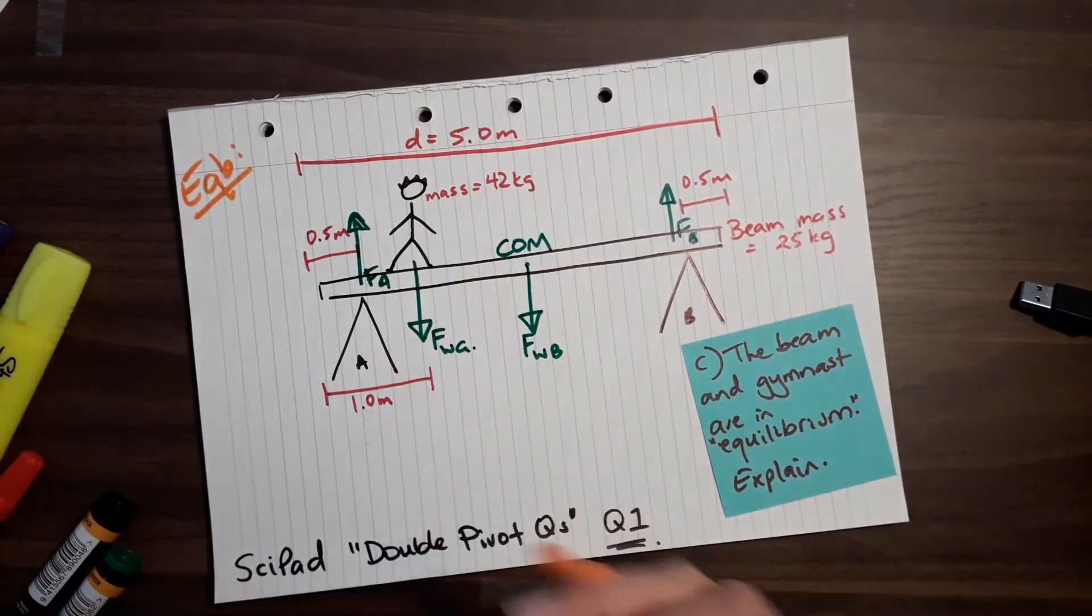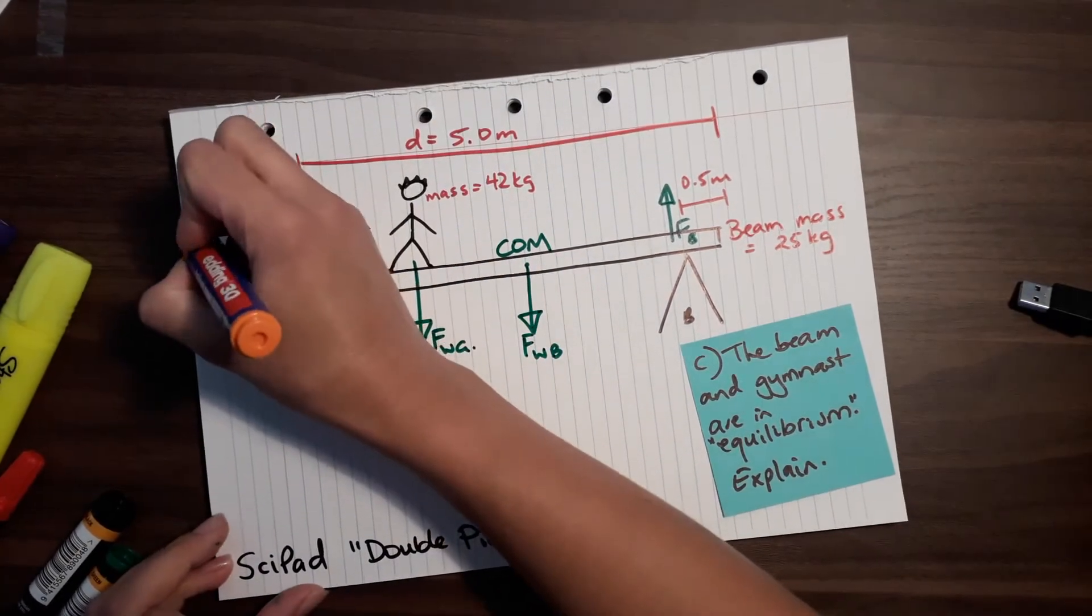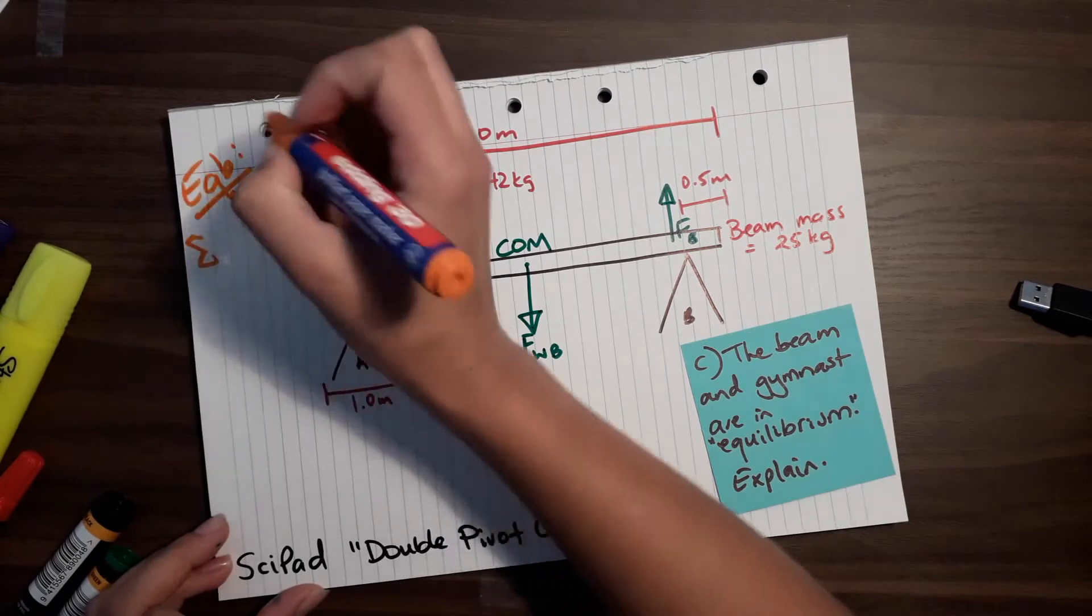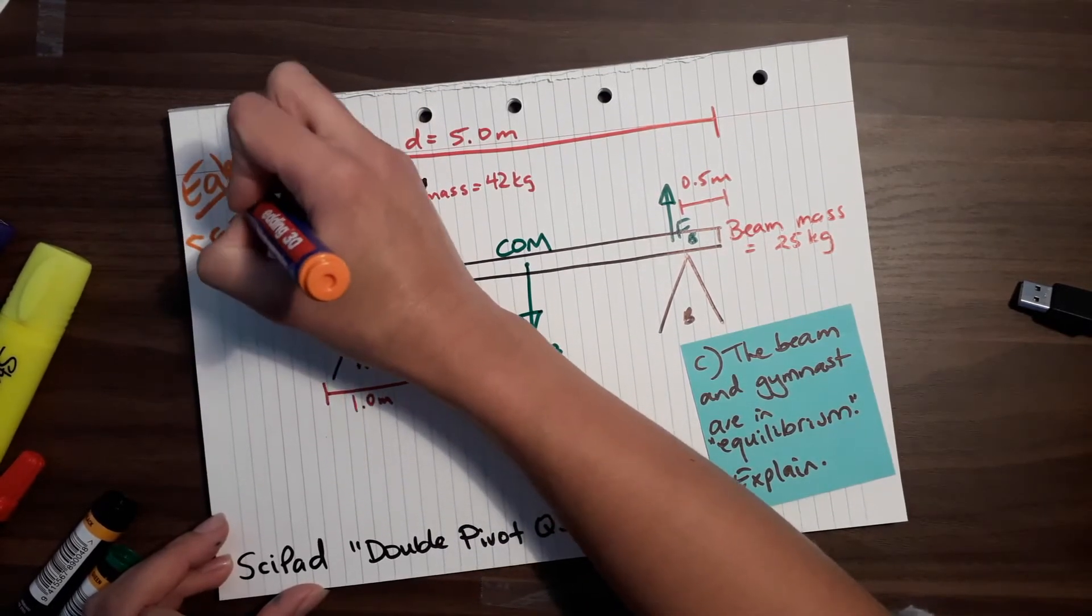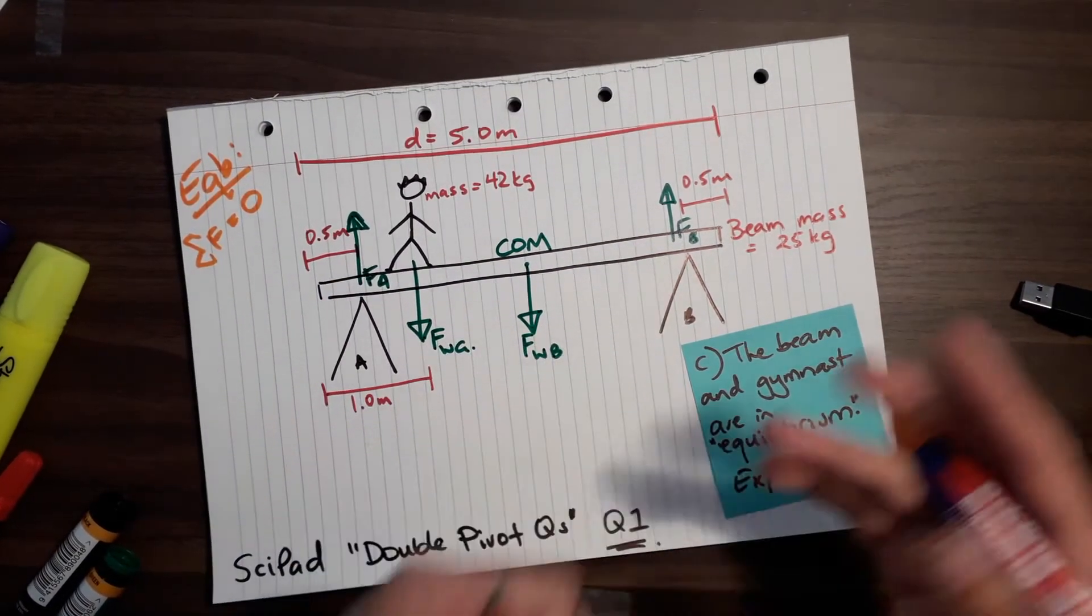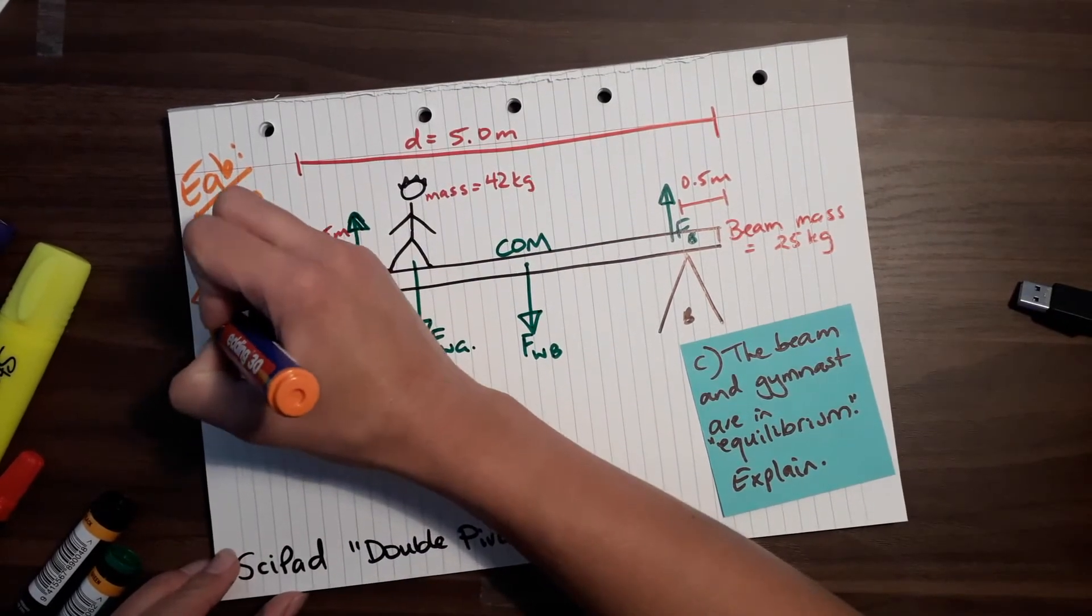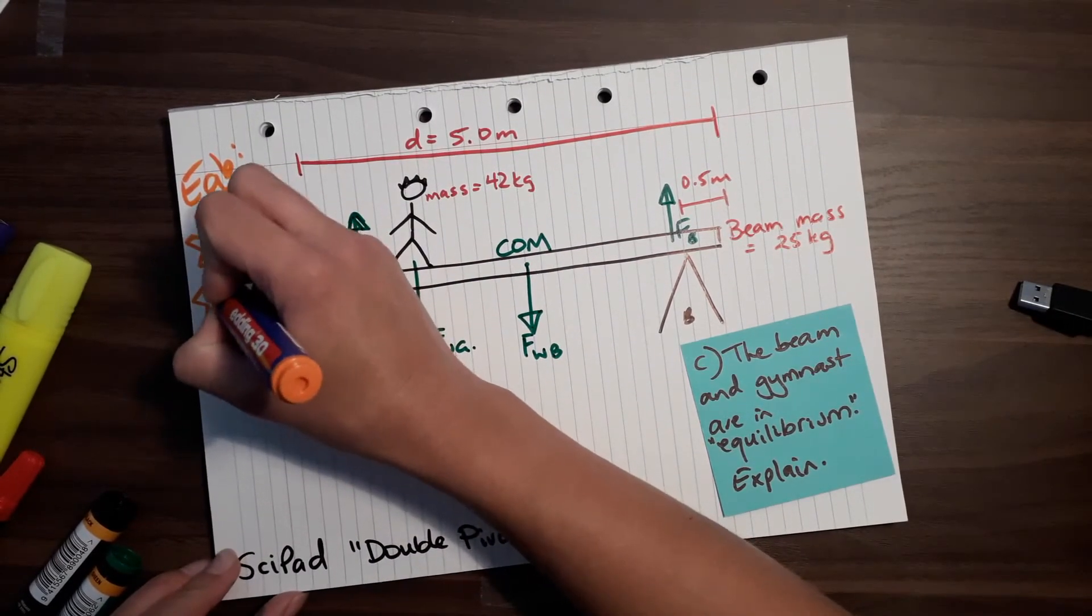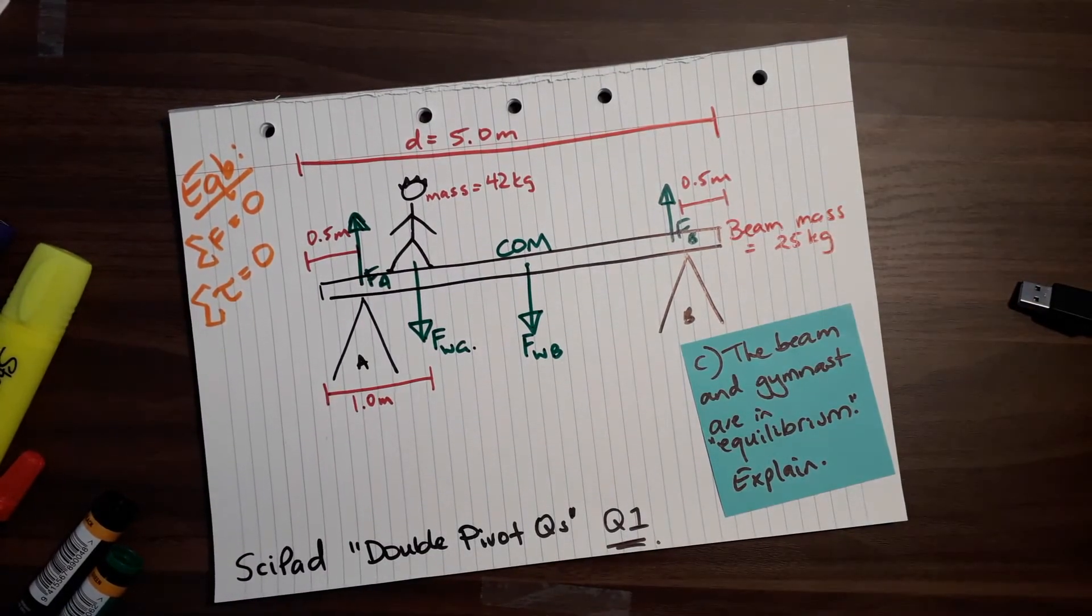Equilibrium, or EQB because I hate writing the word equilibrium, is when the sum of all the forces is equal to zero. So these green forces that we've drawn would all balance each other out.